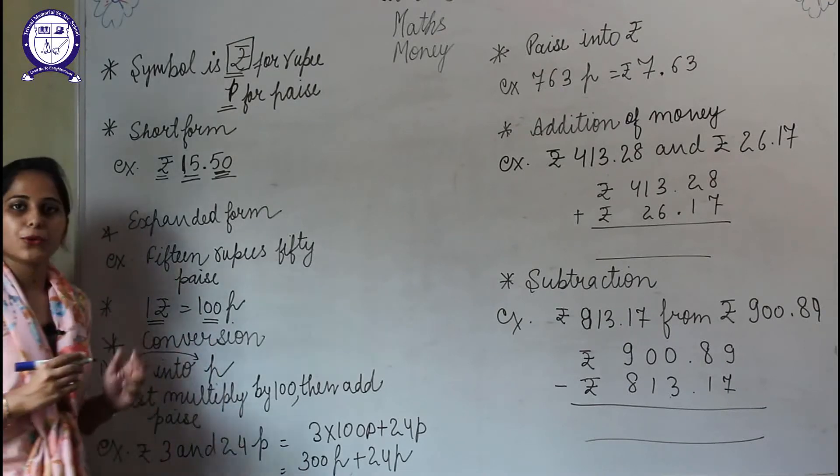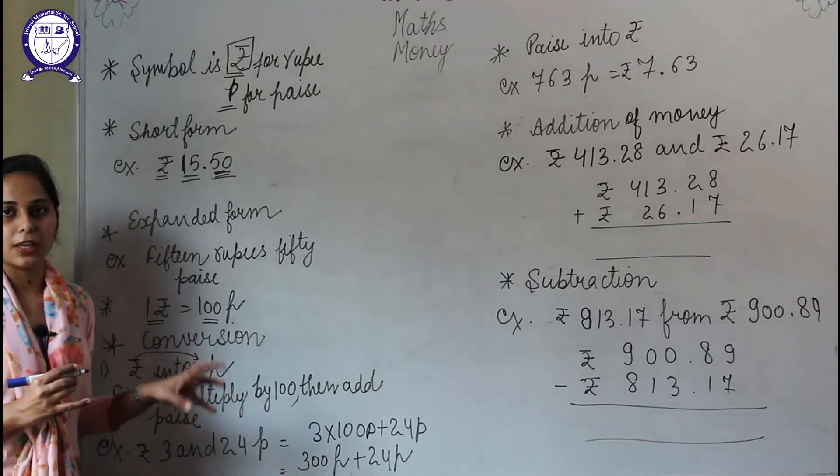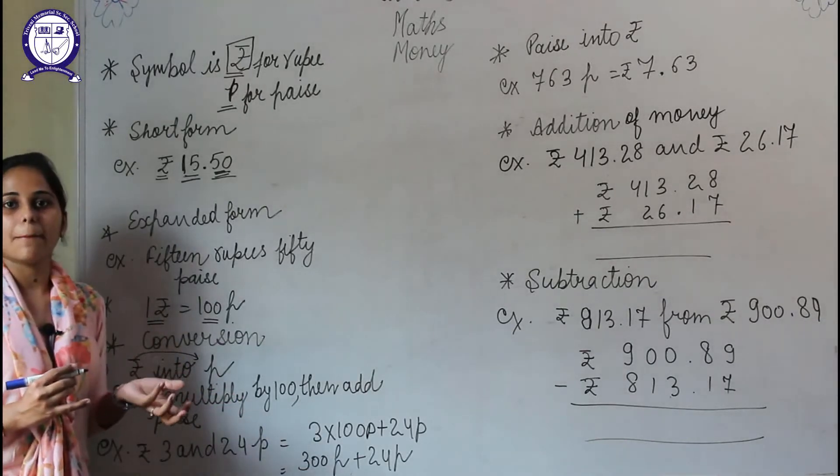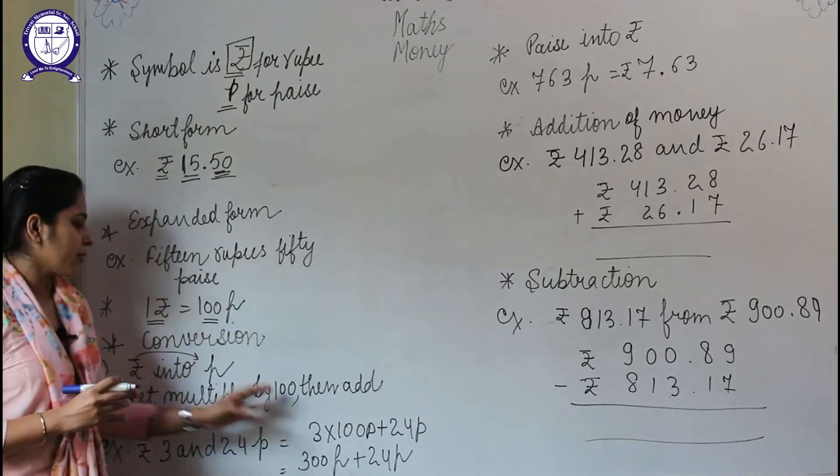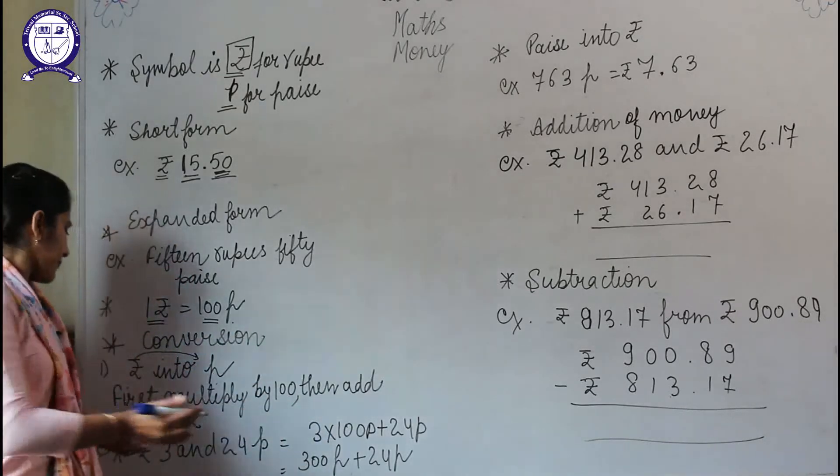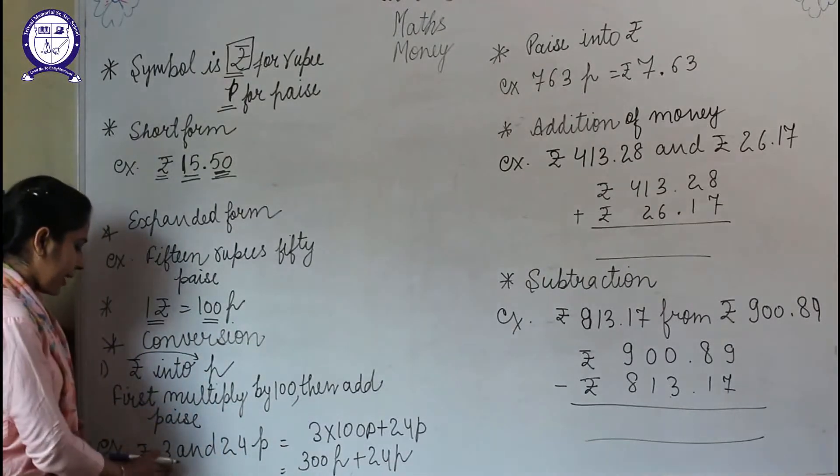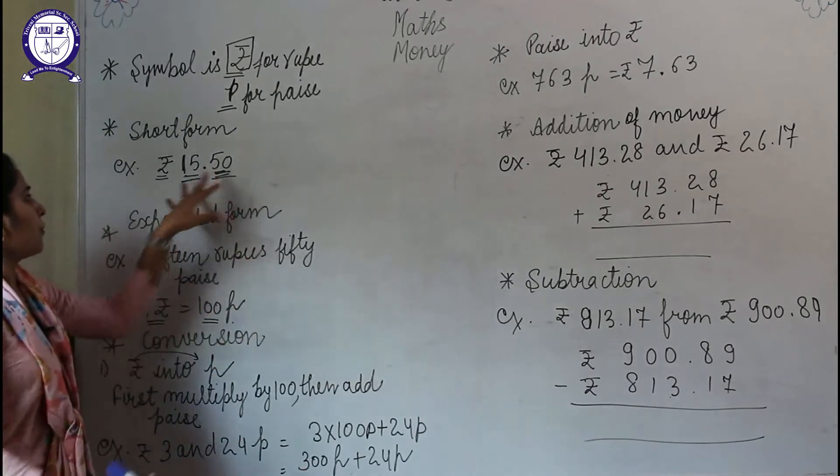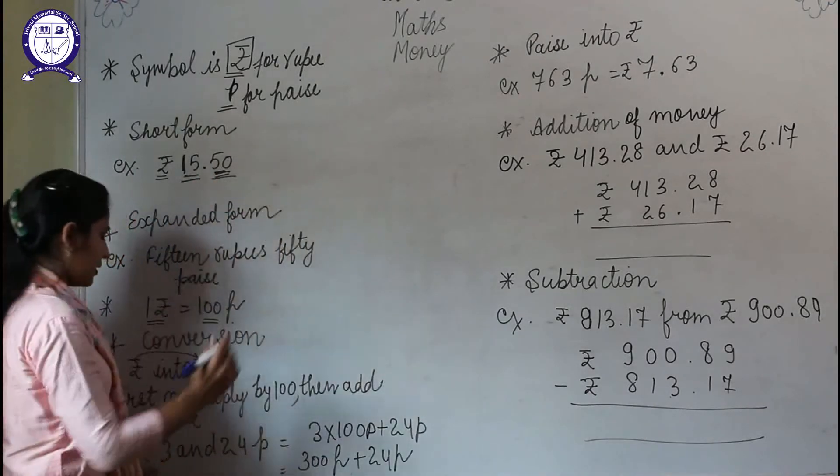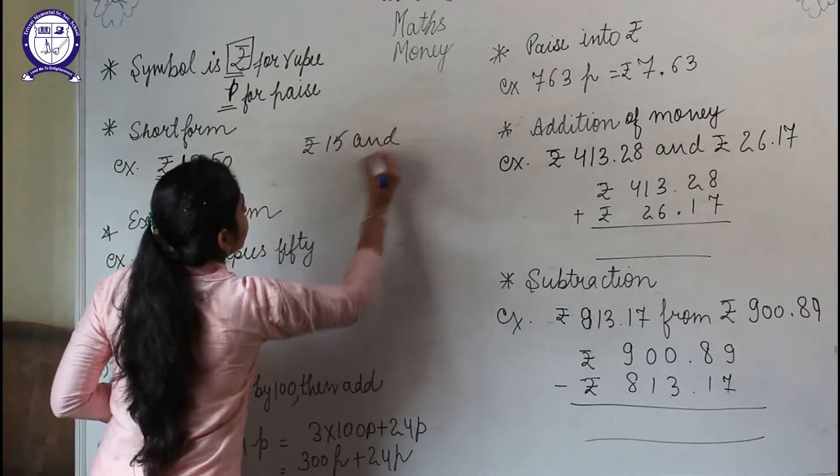to move from rupee into paise, we are moving from larger unit to smaller, so we will multiply the number by 100 and add the number representing the paise. Let's take an example. This will be more clear with an example. Here we are having ₹3 and 24 paise. This form can also be written as ₹15 and 50